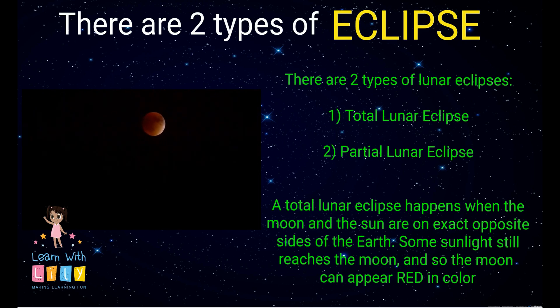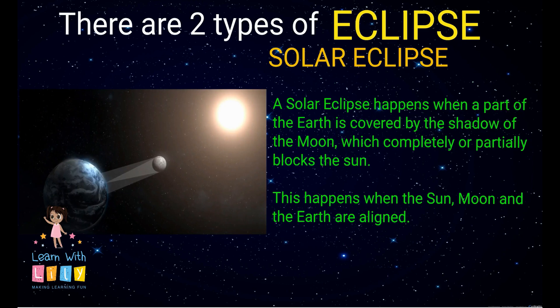A red moon? That's cool! What's the solar eclipse? A solar eclipse happens when a part of the Earth is covered by the shadow of the Moon, which completely or partially blocks the Sun.